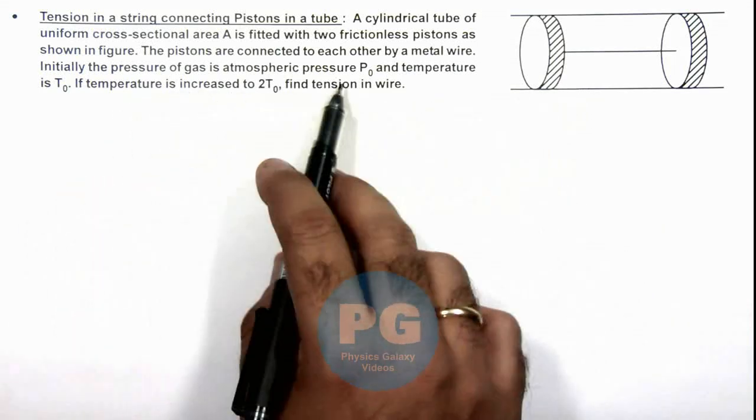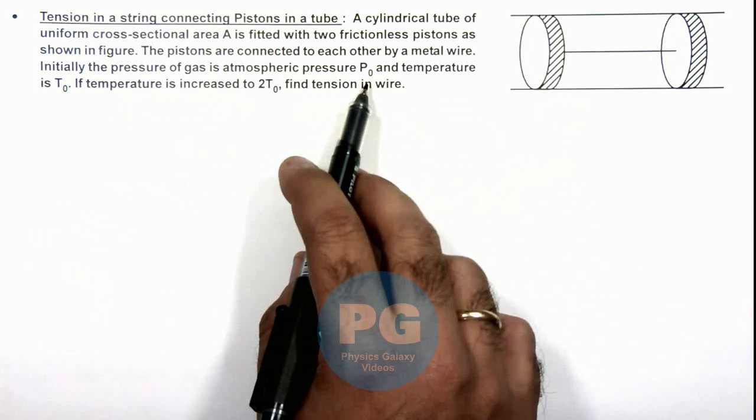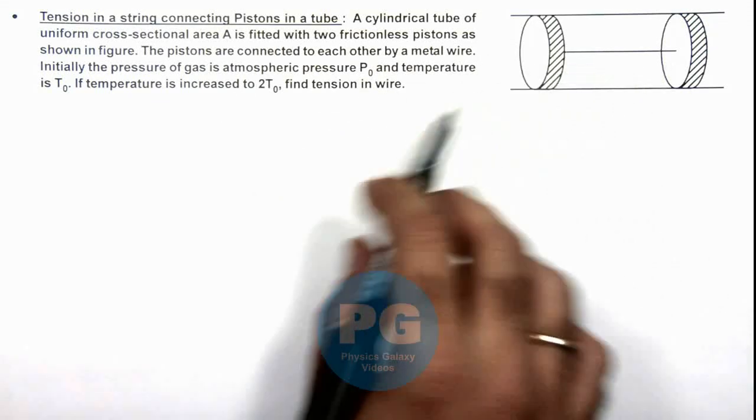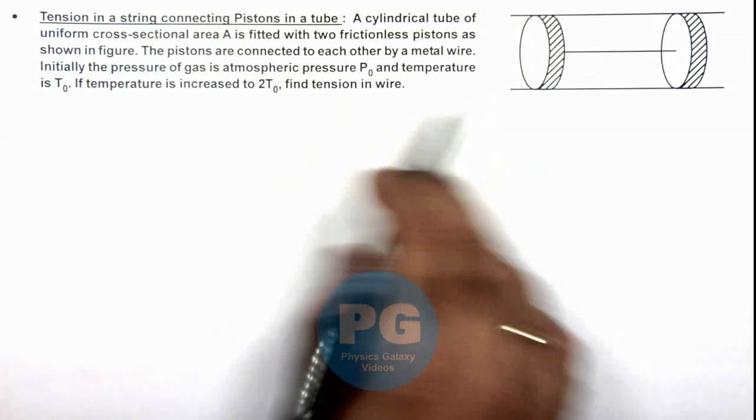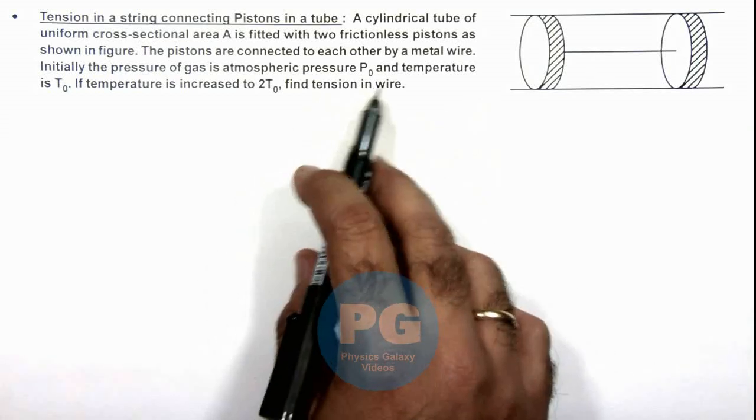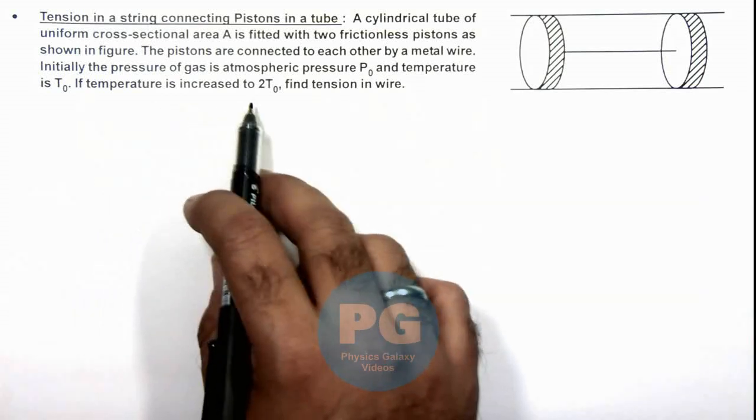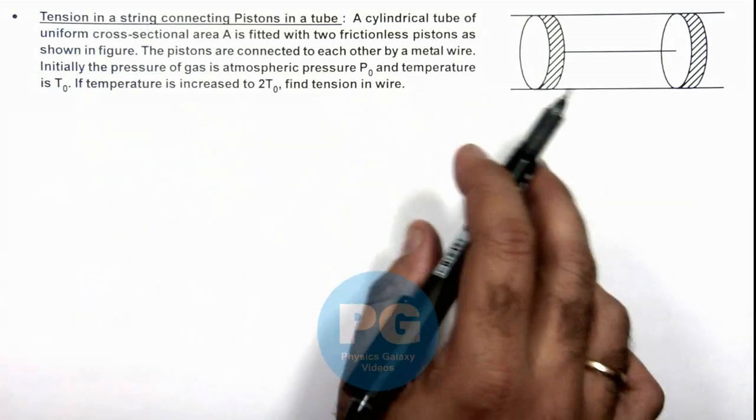Initially, the pressure of gas is atmospheric pressure P₀. So obviously if outside and inside pressure is the same, the string will be unstretched and tension in it would be zero. And the temperature is T₀. It is asking if temperature is increased to 2T₀, we are required to find the tension in the wire.